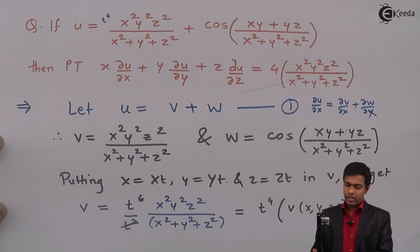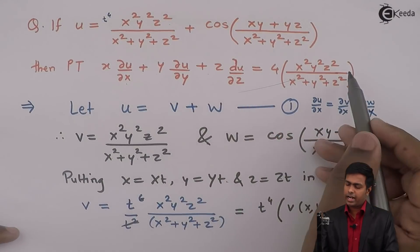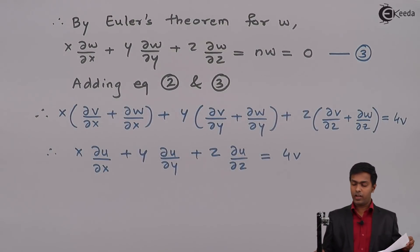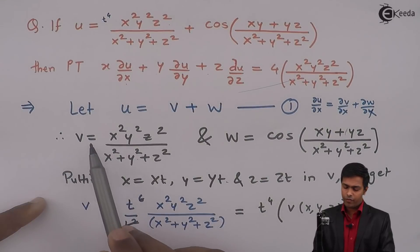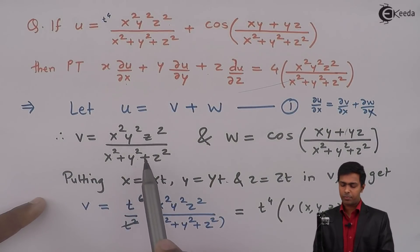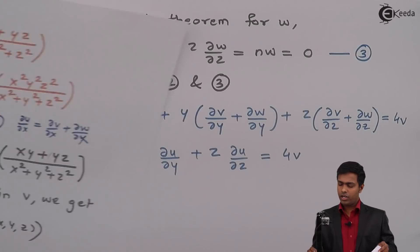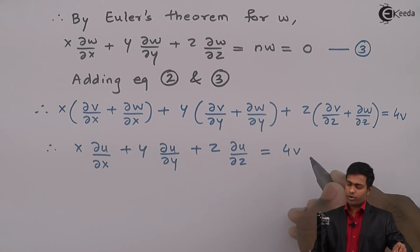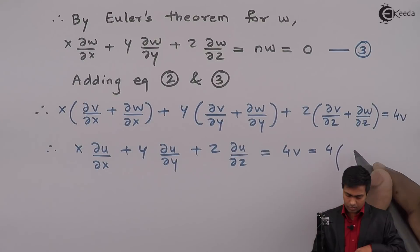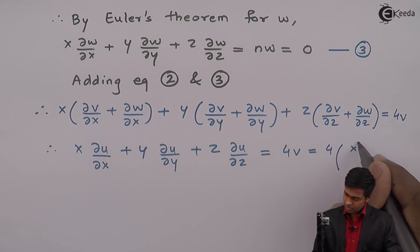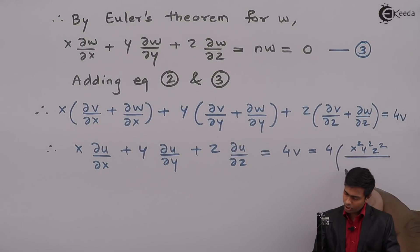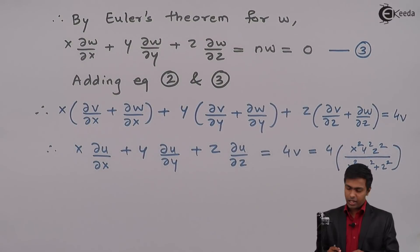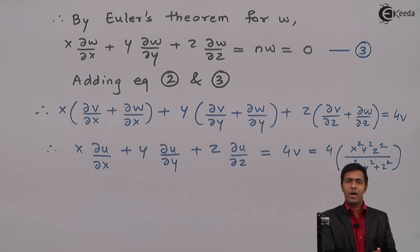We have proved the left hand side. For the right hand side, substituting v = x²y²z²/(x²+y²+z²) gives 4·x²y²z²/(x²+y²+z²), which is the required result. Therefore, we have proved the result using Euler's theorem.